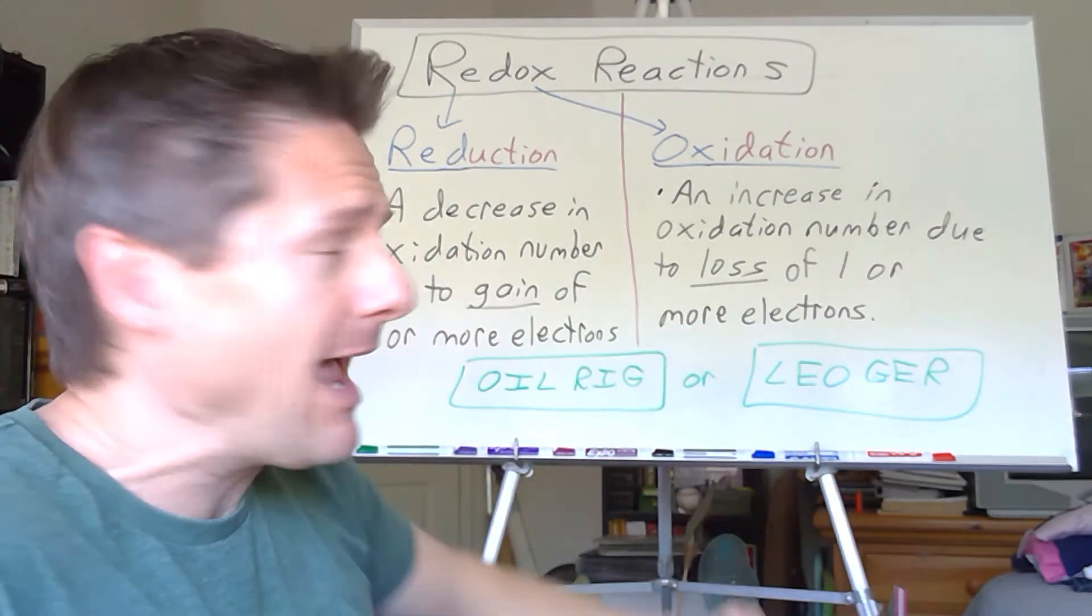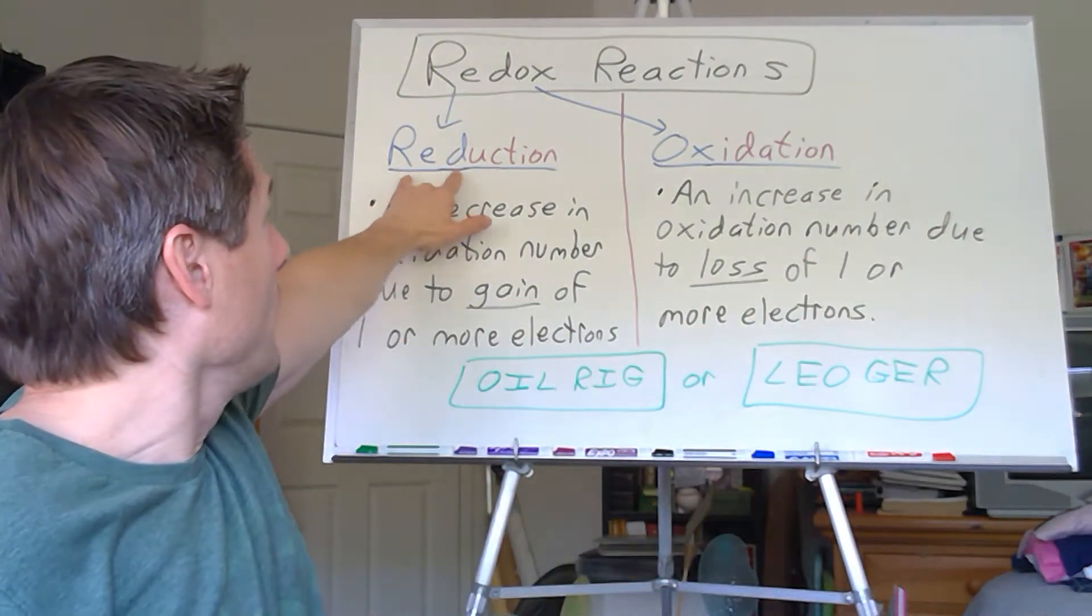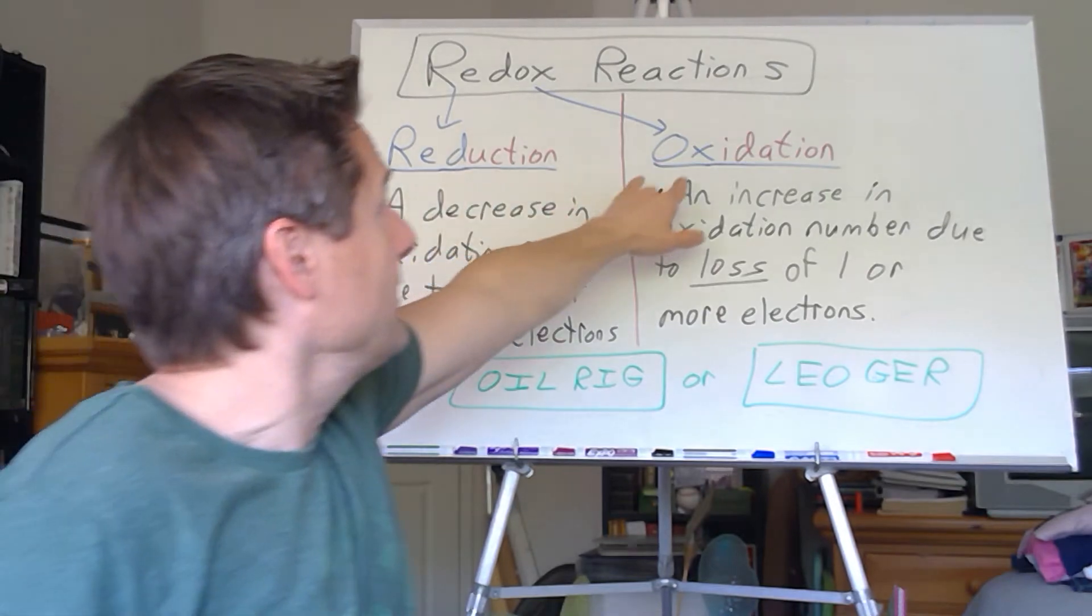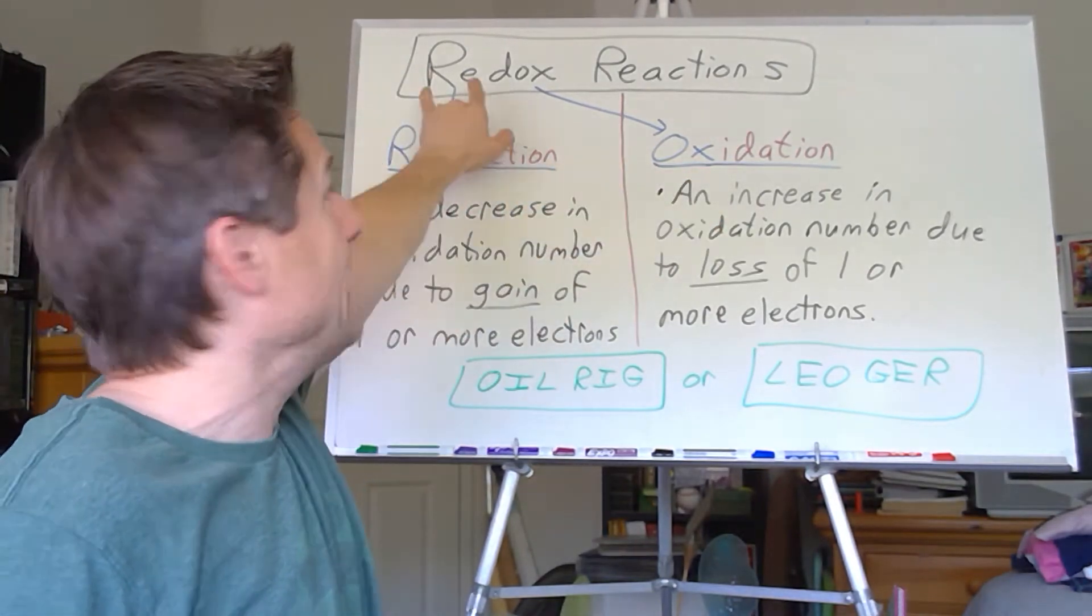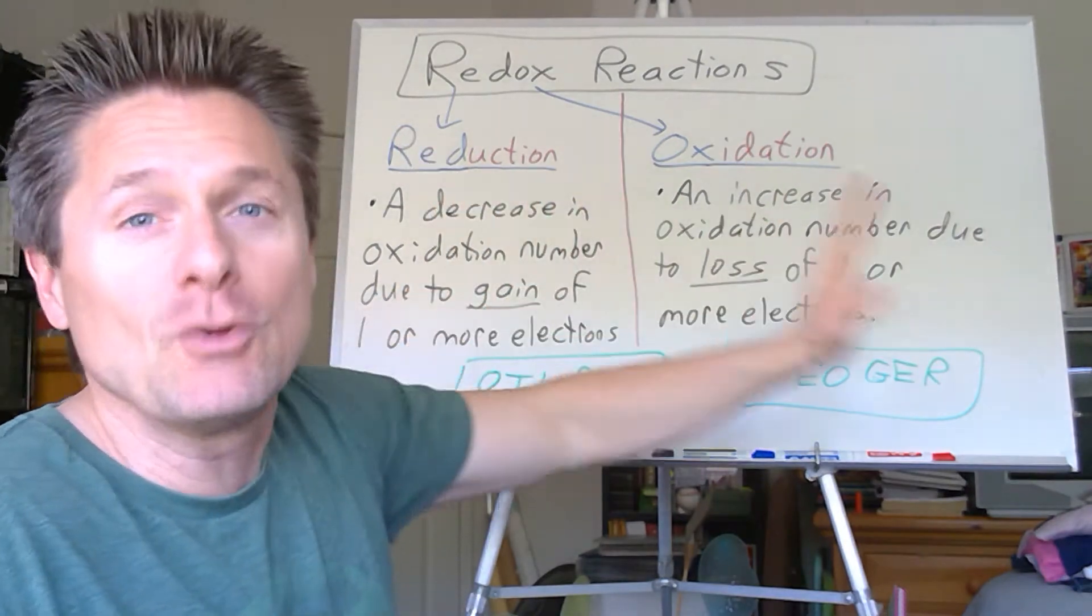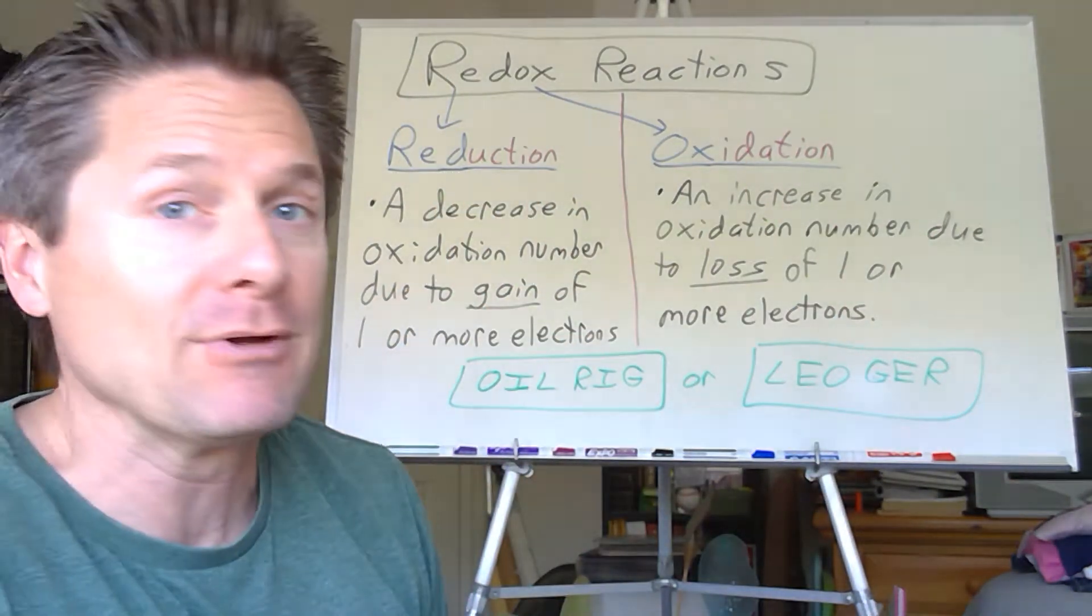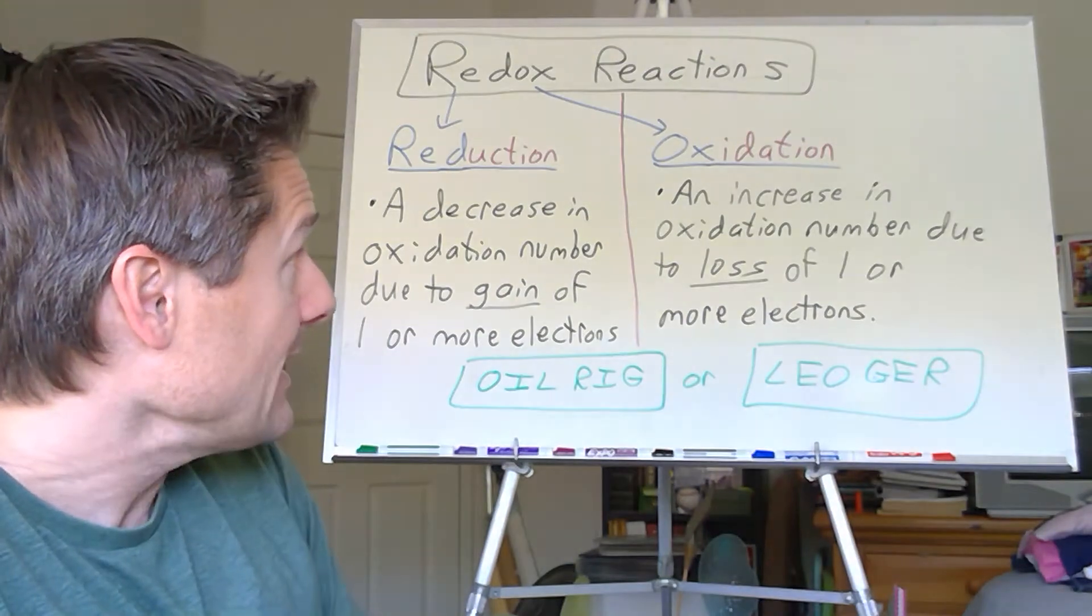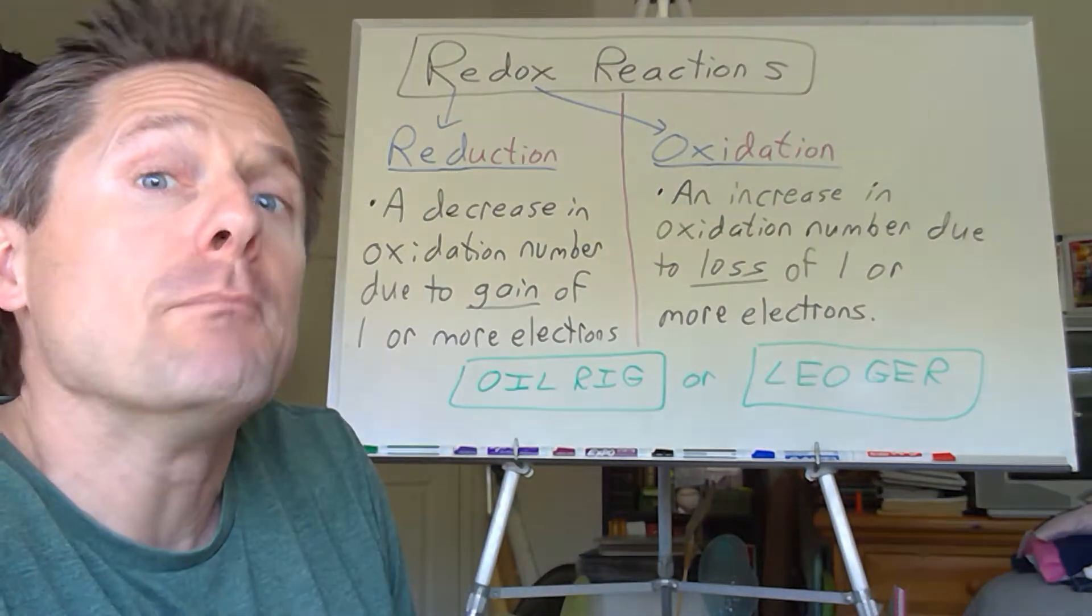So redox, of course, is a contraction. The RED is for reduction, the OX is oxidation sticking together. And what do you get? REDOX. So that stands for reduction with oxidation. It's the combination of the two. You can't really have one without the other.